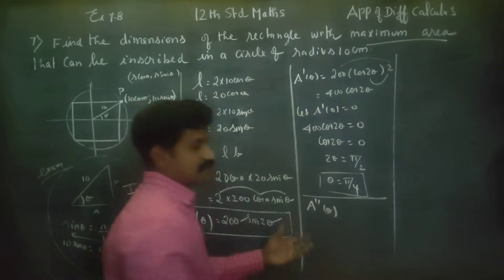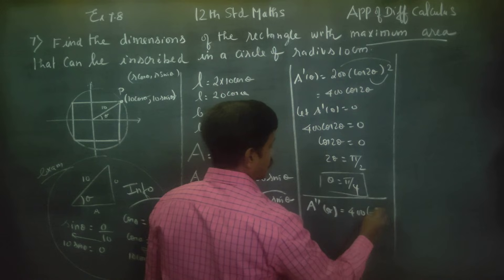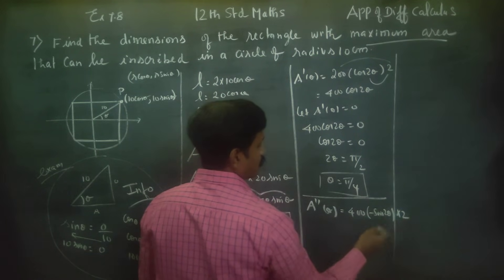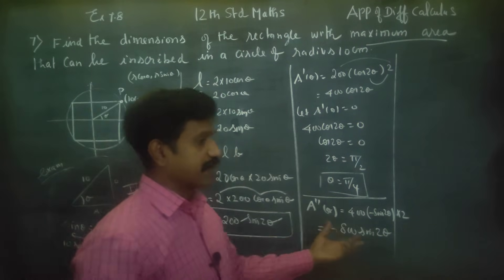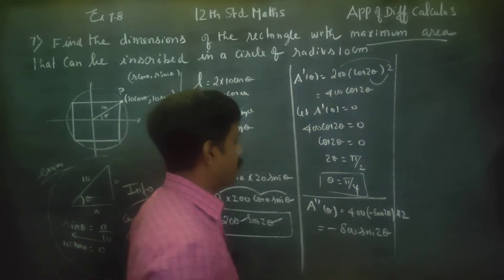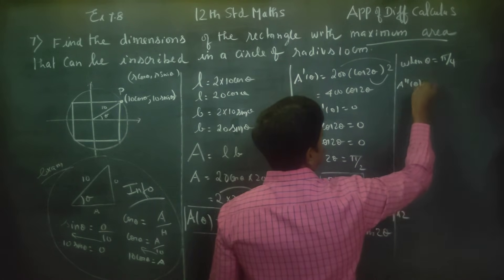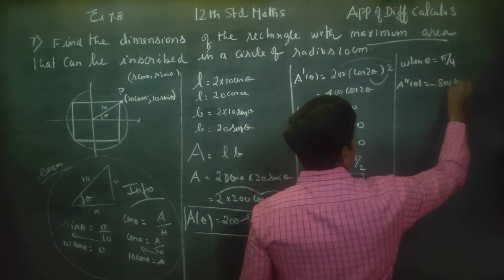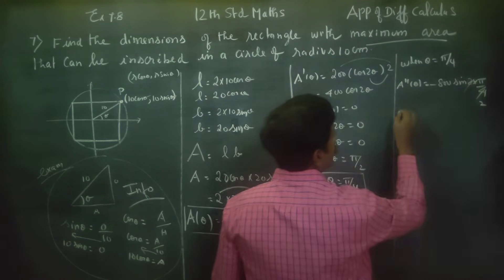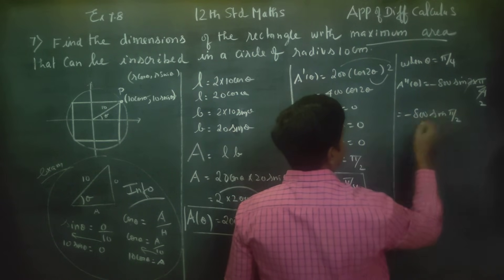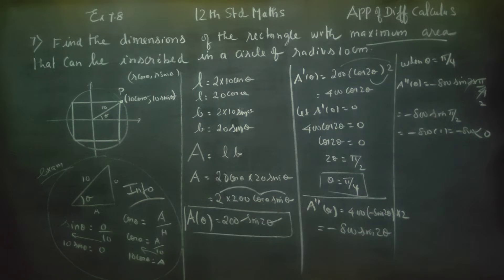Now the second derivative test: differentiate A'(theta) = 400 cos 2theta to get A''(theta) = -800 sin 2theta. Substituting theta = pi by 4: A''(pi/4) = -800 sin(2 × pi/4) = -800 sin(pi/2) = -800 × 1 = -800. Since -800 is less than zero, it is negative, confirming a maximum at theta = pi by 4.